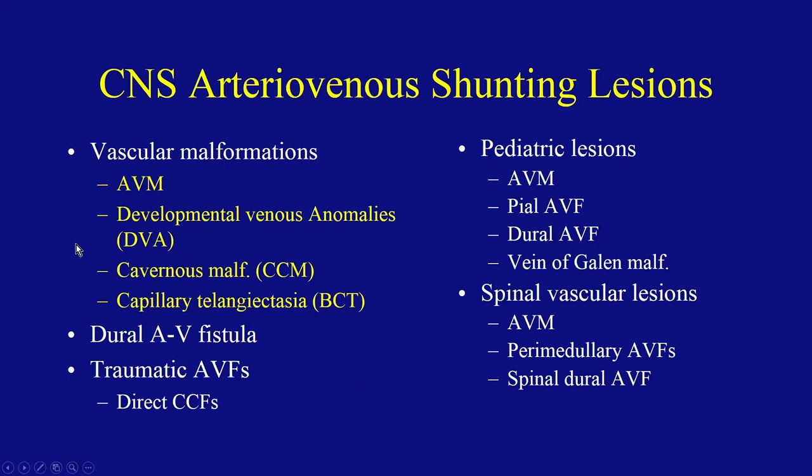We're going to start with true vascular malformations. These are things that you are born with, as opposed to, say, a dural AV fistula, which is usually acquired, or a traumatic AV fistula. The first part of the talk is going to be on these four lesions shown here in yellow.